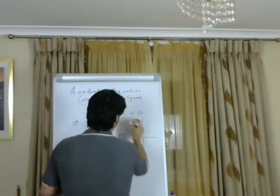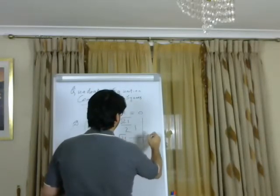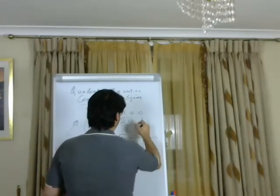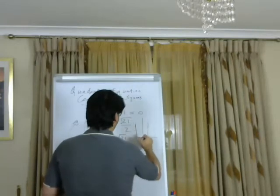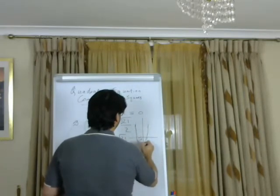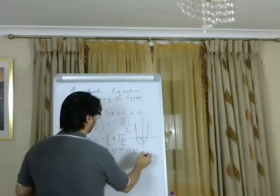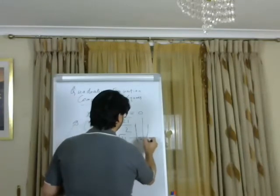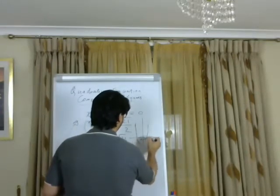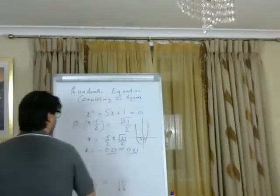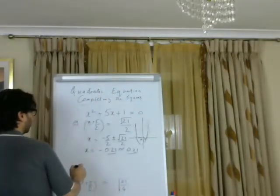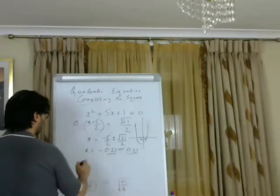If you want to draw a sketch graph, it's going to be a parabola shape. For this expression, x equals 0.21 will lie somewhere on the x-axis of the parabola.